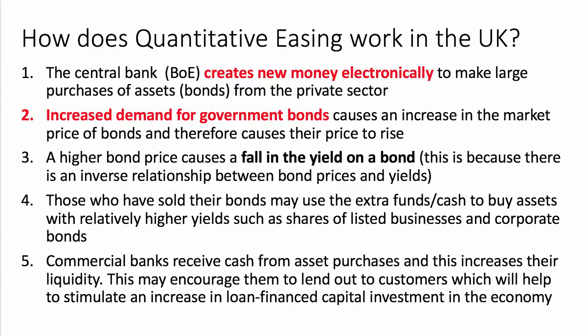Secondly, those who've sold their bonds — the pension funds and commercial banks in particular — may use the extra cash to buy assets with relatively high yields. For example, they might start to buy shares, high-yield corporate bonds, put money into property, or move money overseas in search of high yields. And crucially, replacing government bonds with cash in the economy increases the liquidity of the banks. The hope has been that with banks holding more cash, they're better funded to lend that money out to customers — business customers and households who need to take out a loan — hopefully stimulating loan-financed investment in the economy, which will have both demand and supply side effects.